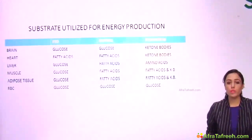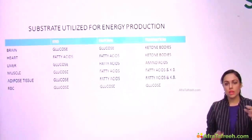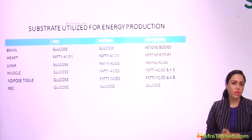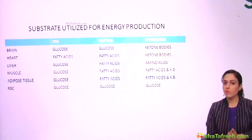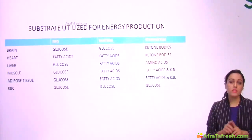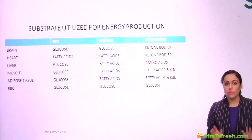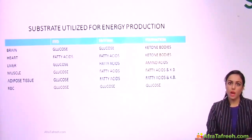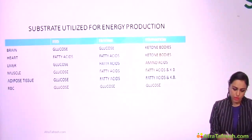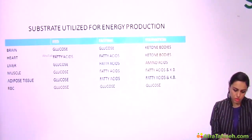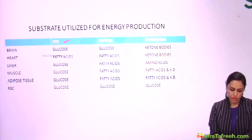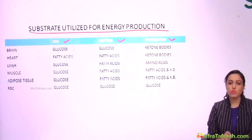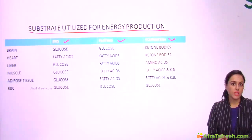In this video, I'm going to cover which fuel is used in various organs in various states in the body — that is, the fed state, fasting state, and starvation state. I'm making a table and I'm going to help you learn this table during this video. The first column is fed state, then fasting state, then starvation state — substrate utilized for energy production for various organs in various states in the body.